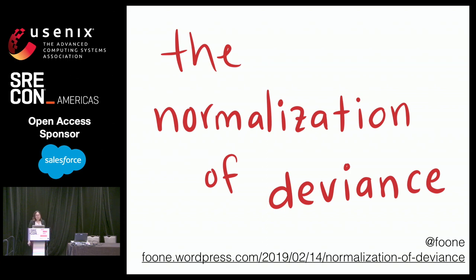This principle is broadly called the normalization of deviance. From the perspectives of the engineers working on the solid rocket boosters, this wasn't going to be the straw that broke the camel's back — this was going to be fine. I want to give credit to Foon Turing for writing the original analysis which prompted me to research this topic. The link to his original blog post is in my bibliography.